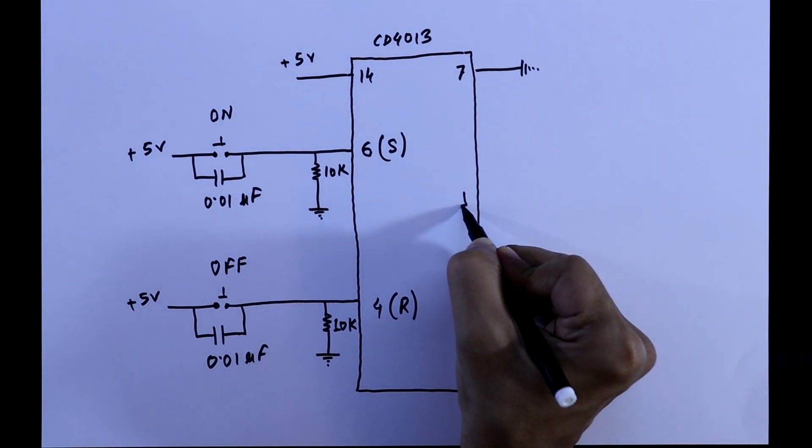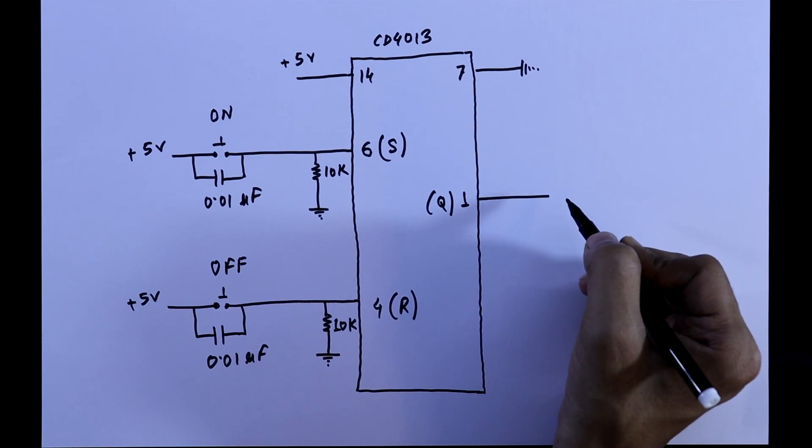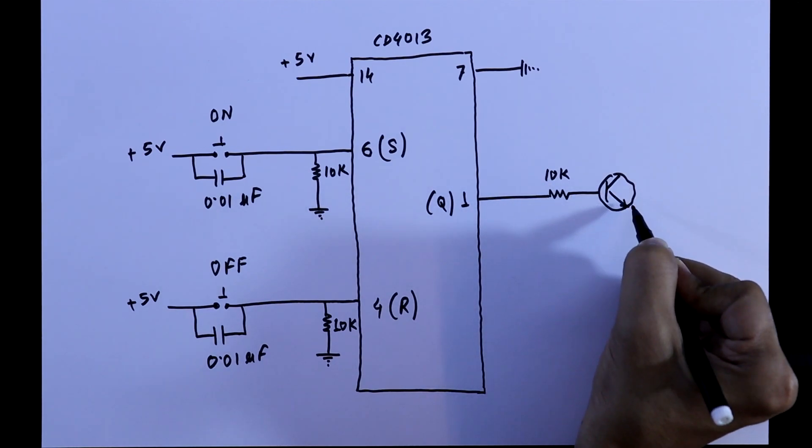We will take output from pin 1. With this pin we can connect a small LED, but if you want to control a bigger load, then you have to connect a relay with a transistor.